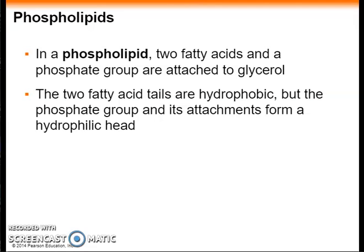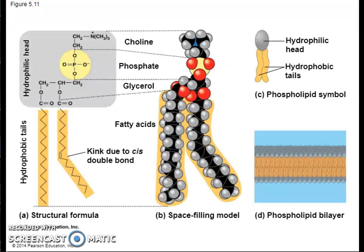Phospholipids are major components of cell membranes. Phospholipids have two fatty acids attached to a glycerol and a phosphate group at the third position. The phosphate group carries a negative charge. Additional smaller groups, usually charged or polar, may be attached to the phosphate group to form a variety of phospholipids. The fatty acid tails are hydrophobic, but the phosphate group and its attachments form a hydrophilic head. The hydrophilic head and hydrophobic tails are visible on a phospholipid, and together they form the phospholipid bilayer that makes up the cell membrane.